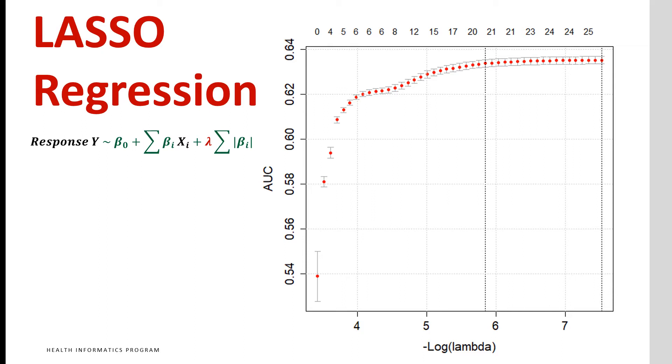Early on, with minus log of lambda values less than 4, we see rapid improvements in accuracy. Between 4 and 5.8, we still see an increase in accuracy but at a slower rate. After 5.8, the accuracy is minimally improved. Therefore, we might decide that lambda at 5.8 produces the best model for us, both parsimonious and relatively accurate.